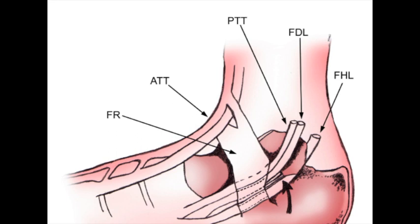More posterior to that is the FHL, flexor hallucis longus. Now between the FDL and FHL, you will visualize the tibial artery and nerve running between those two structures.